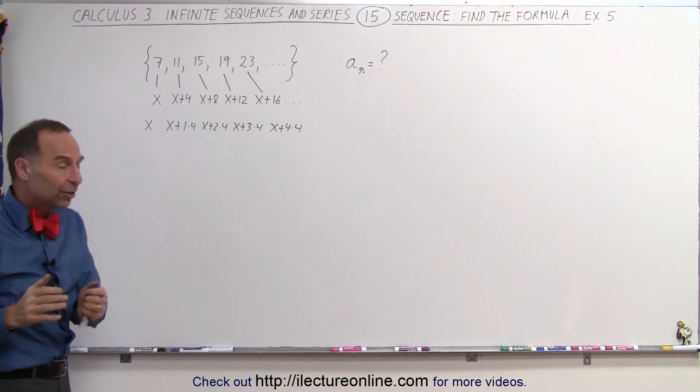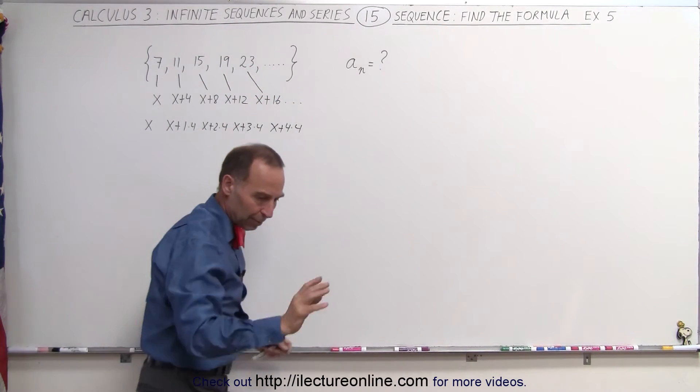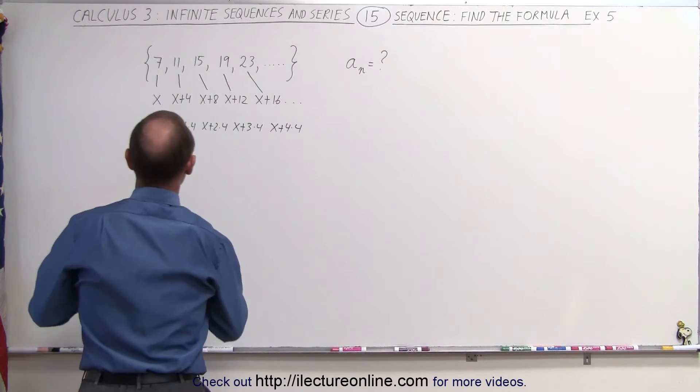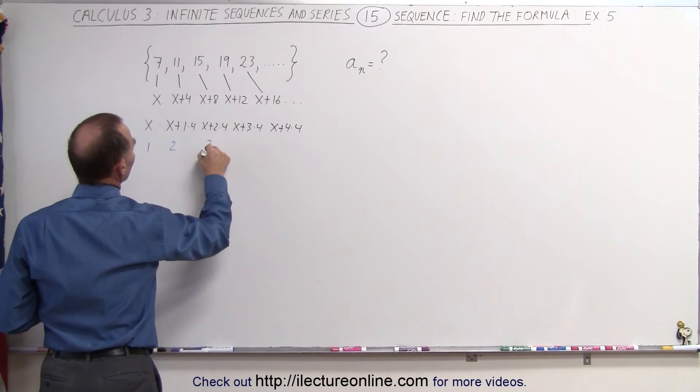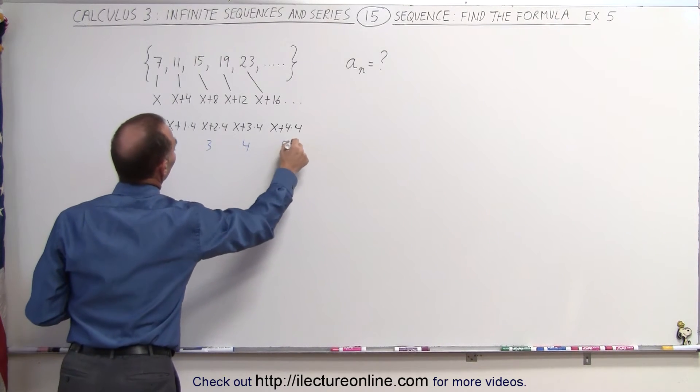Now we're going to put in the values for n. So n, in this case, would be 1, would be 2, would be 3, 4, and 5.